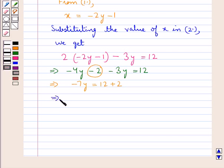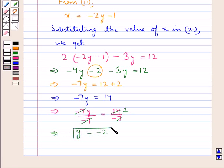This gives us minus 7y is equal to 14. Now, to get the value for y, we divide both sides by minus 7. Minus 7 cancels with minus 7, and 7 times 2 is 14. So we get the value of y as minus 2.